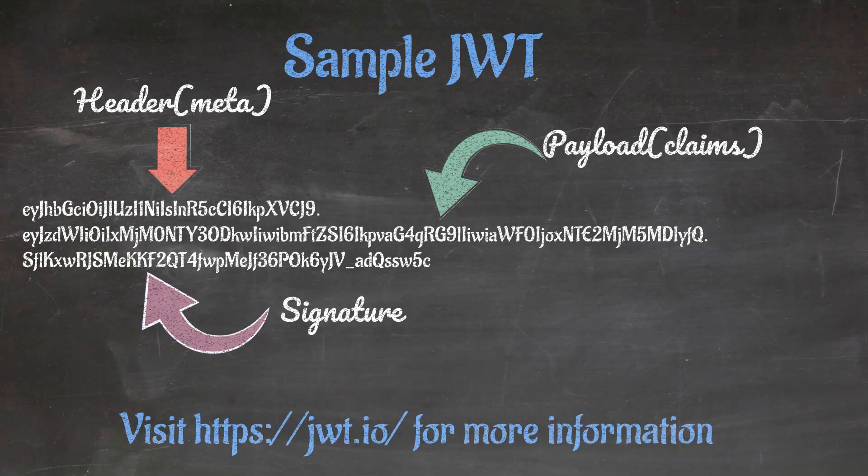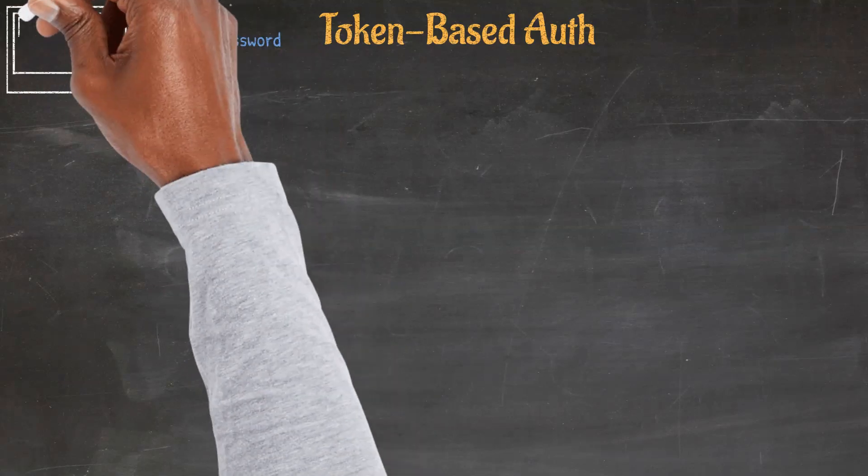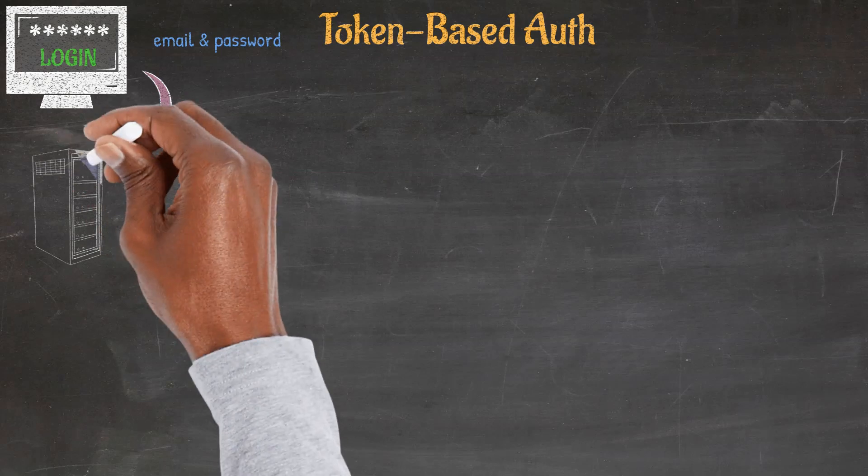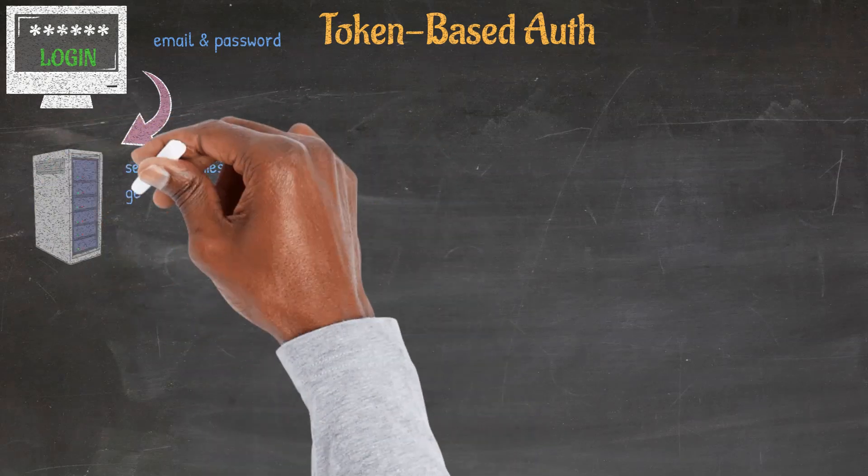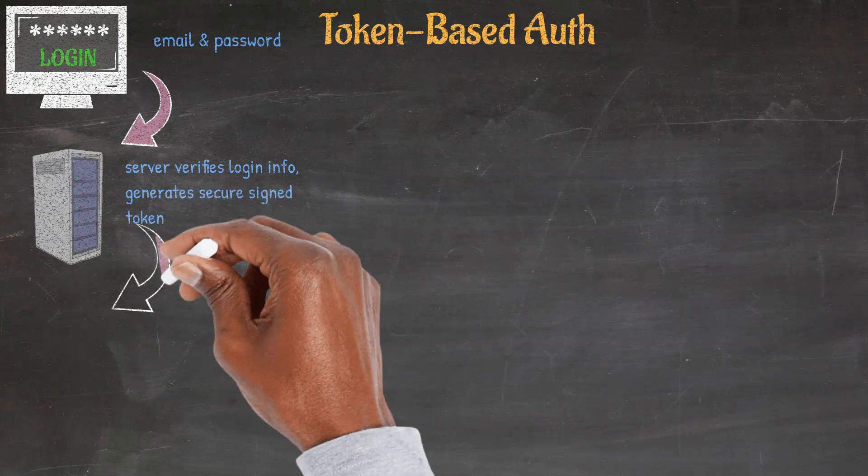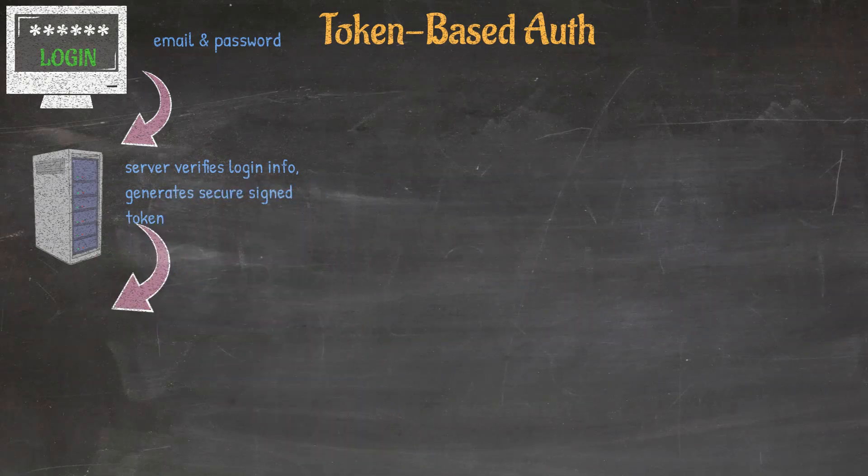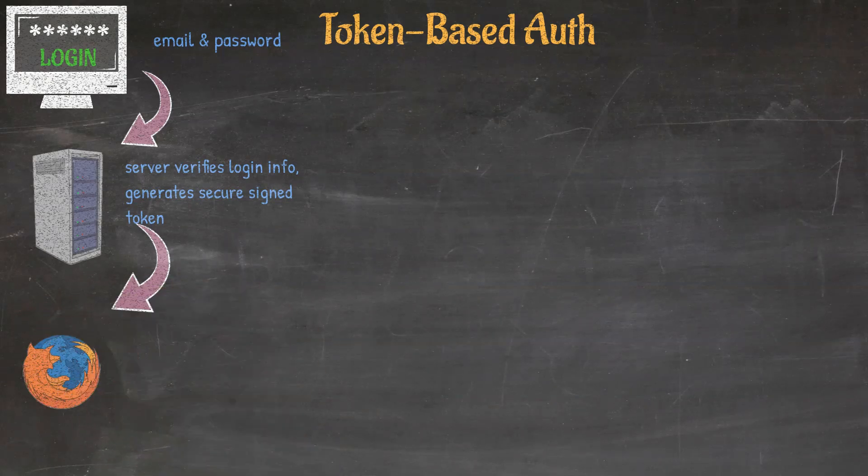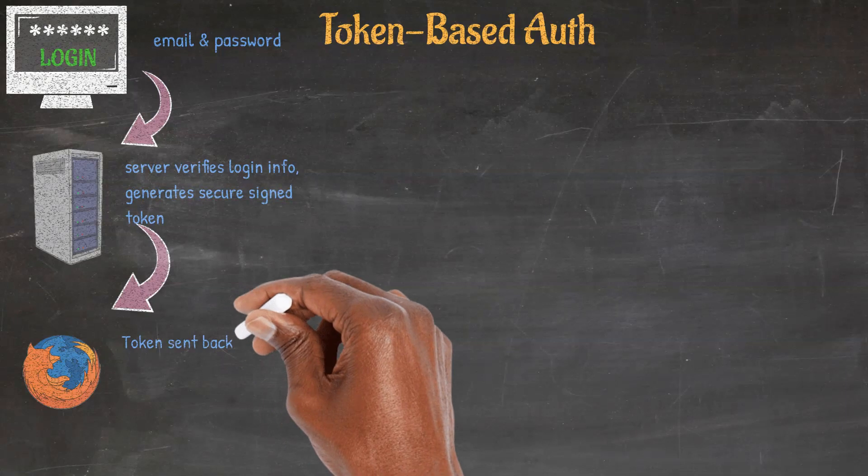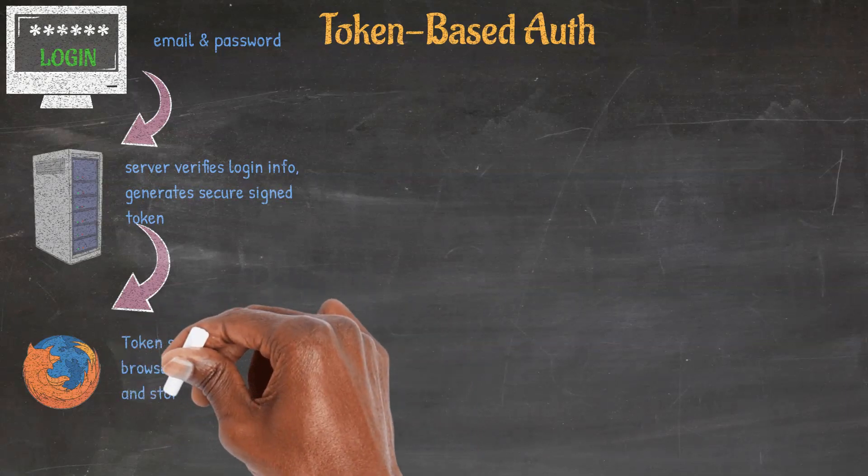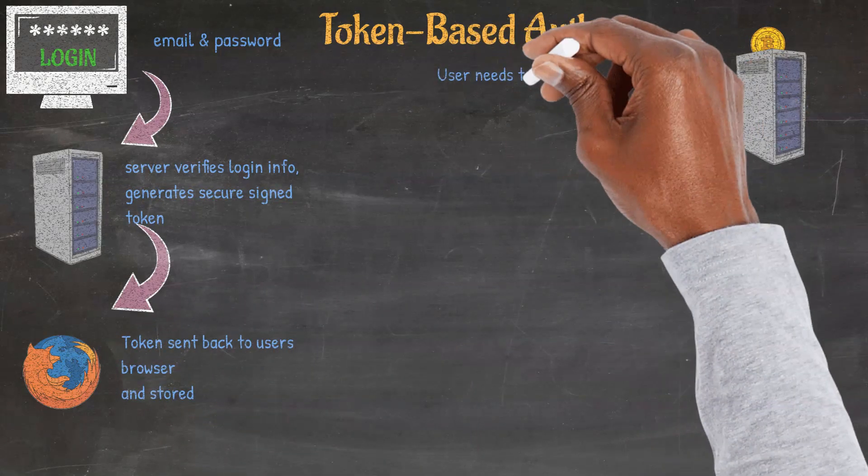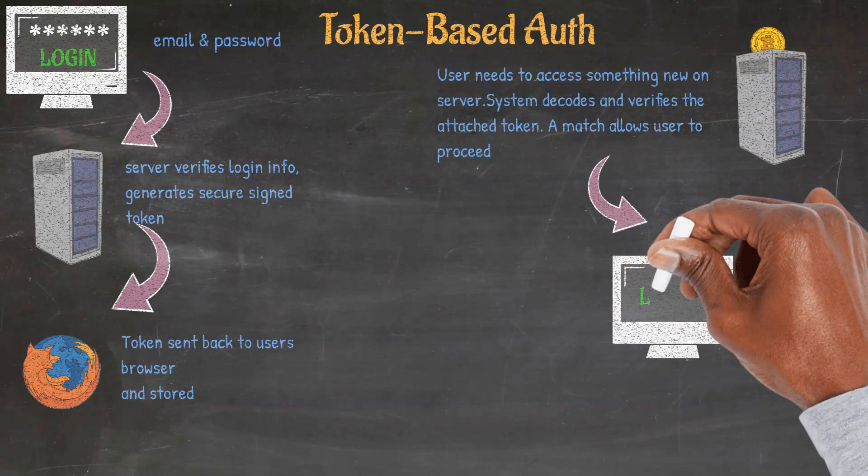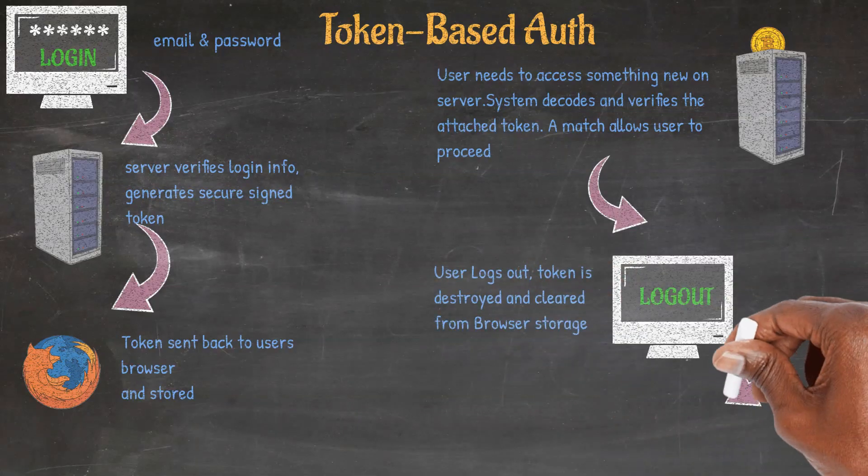How does JWT authentication work? Users register on a website, for example with an email and password. When the user then logs in, the server verifies the credentials against the database. The server then generates a temporary token and embeds user data into it. It sends this token as a header or in the body of the response. While the user stays logged in, the token is stored in the browser storage. This token will then be sent along with every subsequent request. The server then verifies the token for its legitimacy and grants access. When the user logs out, the token is cleared from browser storage.